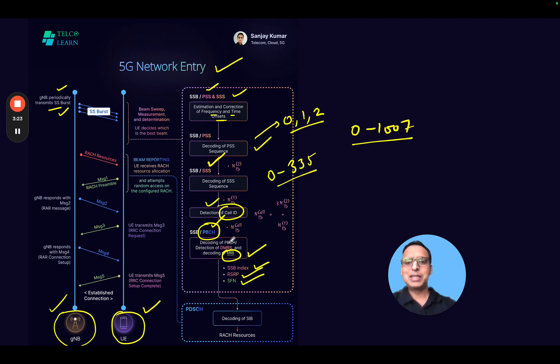After completing the MIB decoding and reading the MIB, the user will move on and look for the PDSCH to decode the SIB1. There are multiple values of SIBs; in this case, we are just decoding SIB1. MIB and SIB1 together are called minimum system information, which will allow the user to do the random access procedure.